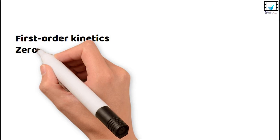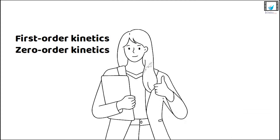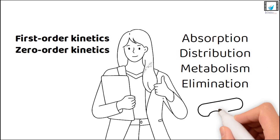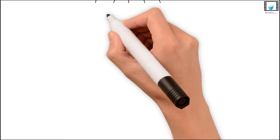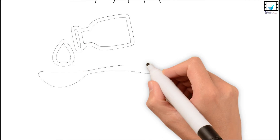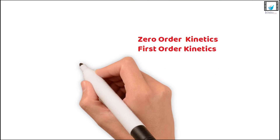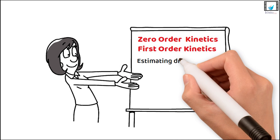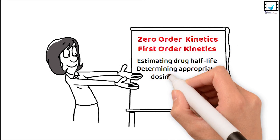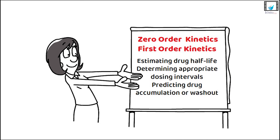Understanding first-order and zero-order kinetics is crucial for comprehending the absorption, distribution, metabolism, and elimination of drugs within the body. It helps determine dosing regimens to maintain therapeutic drug levels and avoid toxicity. It also assists in estimating drug half-life, determining appropriate dosing intervals, and predicting drug accumulation or washout.